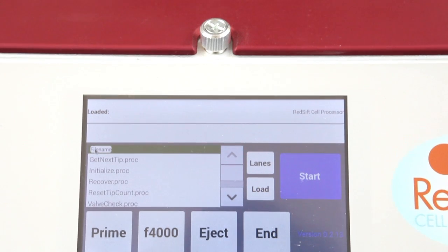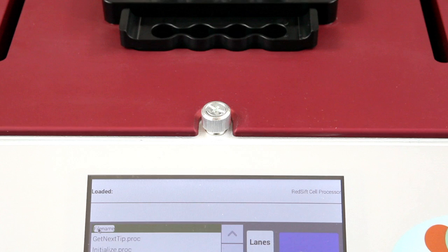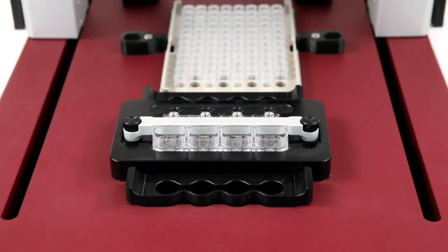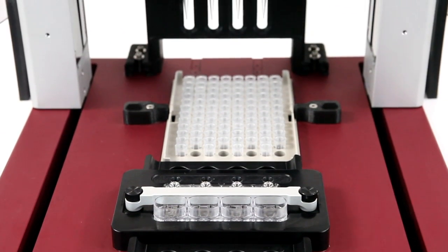The Red Sift Cell Processor from Aviva Biosciences separates blood components, removing red blood cells, platelets, and plasma, while enriching total nucleated cells.